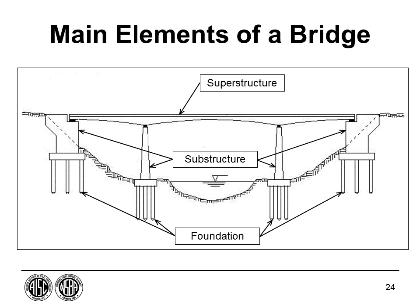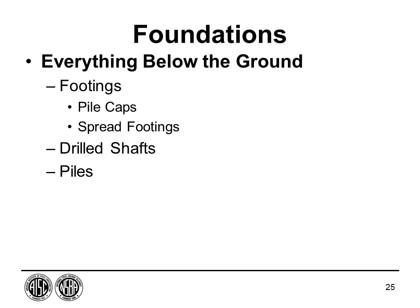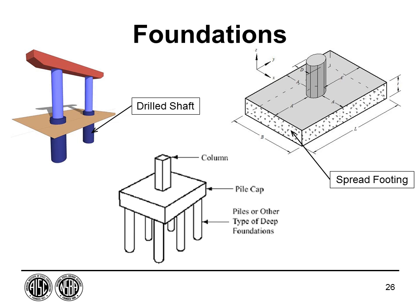Foundations are bridge elements typically below the ground surface, including footings, drilled shafts, and piles. All the load from the bridge must go somewhere, and the foundations distribute that load to the ground below. Typical examples include a drilled shaft below a column, piles located below a pile cap, and a spread footing beneath a column.